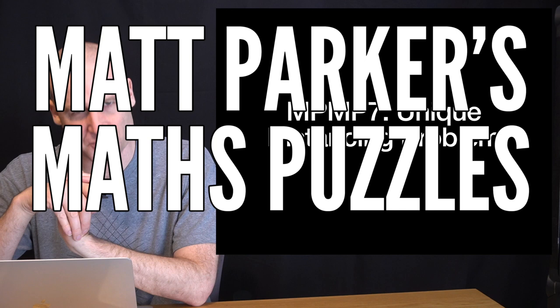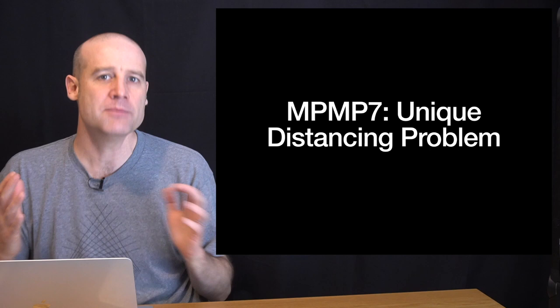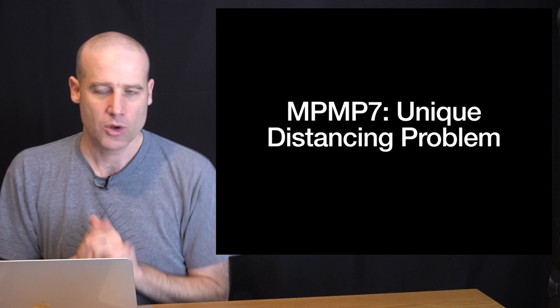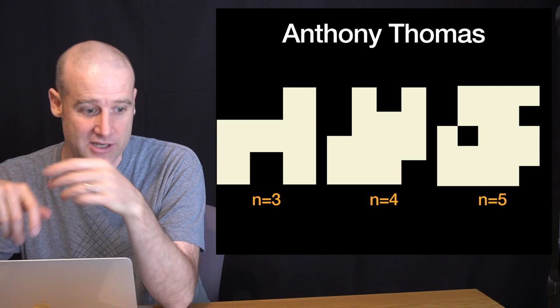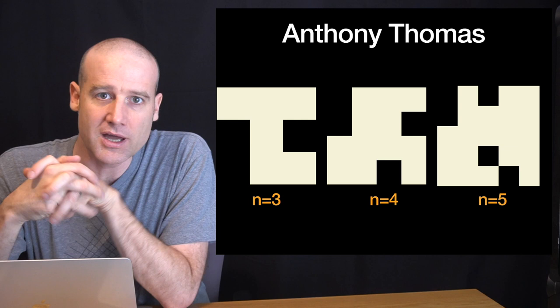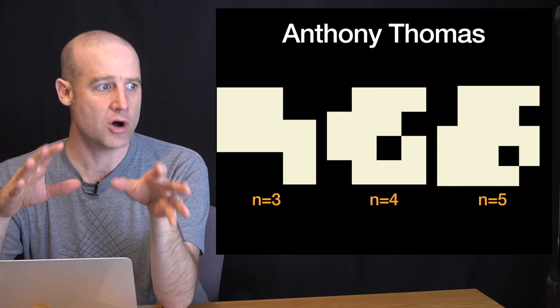This is where you had to arrange N tokens on an N by N grid such that every possible pairing is a unique distance compared to all the other possible pairings. As people discovered reasonably quickly, it's comparatively straightforward for the smaller cases. Anthony here sent in a nice animation for the N equals 3 grid, N equals 4, and N equals 5.